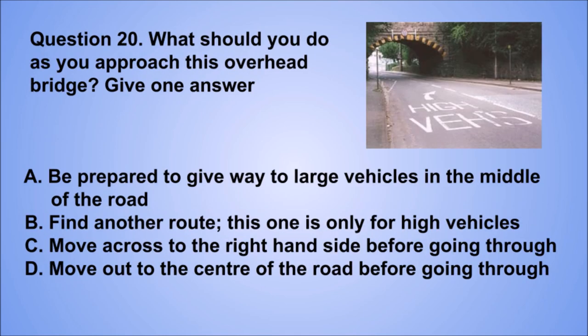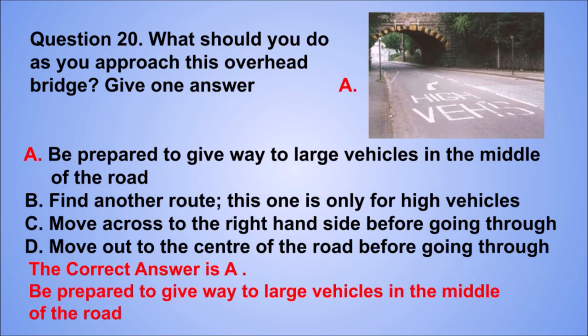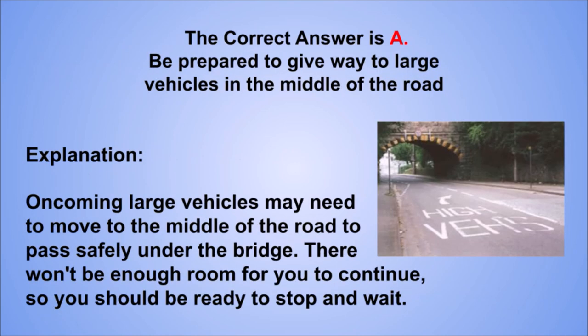Question 20. What should you do as you approach this overhead bridge? Give one answer. A. Be prepared to give way to large vehicles in the middle of the road. B. Find another route, this one is only for high vehicles. C. Move across to the right-hand side before going through. D. Move out to the center of the road before going through. The correct answer is A, be prepared to give way to large vehicles in the middle of the road. Oncoming large vehicles may need to move to the middle of the road to pass safely under the bridge. There won't be enough room for you to continue, so you should be ready to stop and wait.